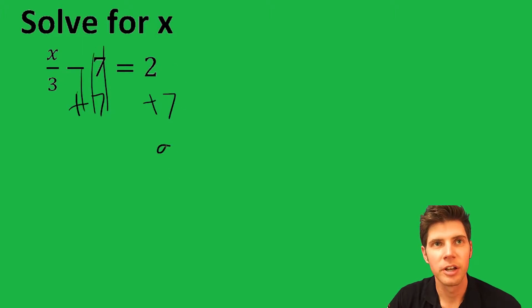This is going to cancel, and 2 plus 7 is 9. So then we have x over 3 equals 9.